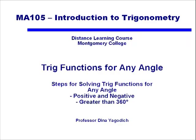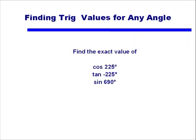In this video we're finally going to learn how to take our knowledge of acute angles and translate that to solving trig functions for any angle — positive angles, negative angles, and angles greater than 360 degrees. For example, you should be able to solve questions like cosine of 225 degrees, tangent of negative 225 degrees, and sine of 690 degrees.